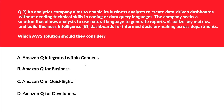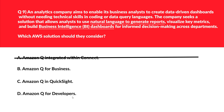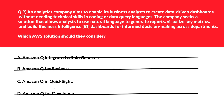This question is about business intelligence and dashboards. Option A says Amazon Q integrated within Connect — this is not designed for building BI dashboards, so incorrect. Options B and D say Amazon Q for Business and Amazon Q for Developers respectively — both of these options don't exist in AWS, so these two are invalid choices. We are left with option C: Amazon Q in QuickSight — this enables users to build BI dashboards using natural language, making it perfect for non-technical business analysts. Hence this is the correct answer.